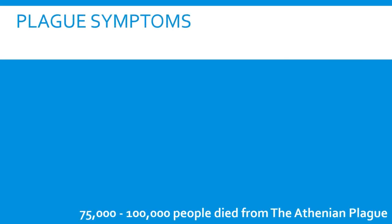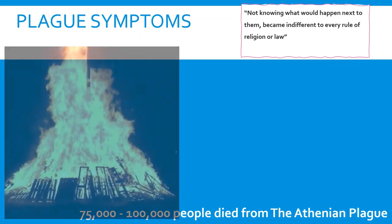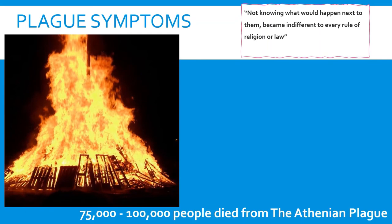An estimated 75,000 to 100,000 people died from the Athenian Plague — that is 25% of Athens' population. At the time, funeral pyres were everywhere. People threw the dead onto burning fires — they had no choice, there were too many dead bodies and they had to get rid of them. Spartans saw the smoke from the funeral pyres, and it scared even the fearless Spartans, who withdrew their troops away from the city walls to make sure they wouldn't catch the plague.